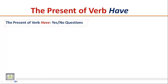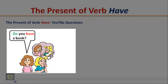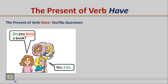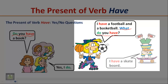The present of verb 'have' — questions. Listen to the following short conversations and pay attention to the word order in questions. Do you have a book? Yes, I do. I have a football and a basketball. What do you have? I have a skateboard.